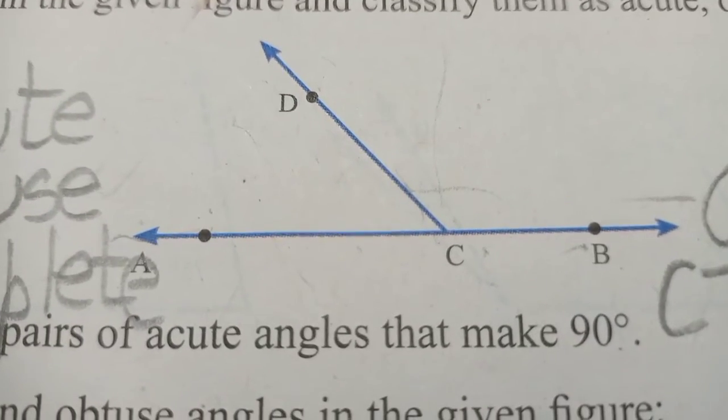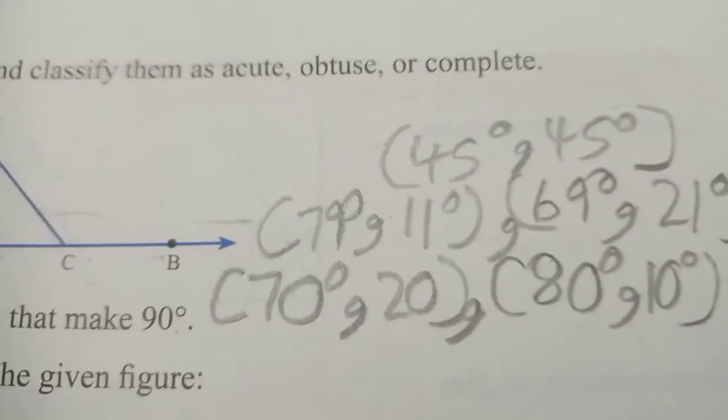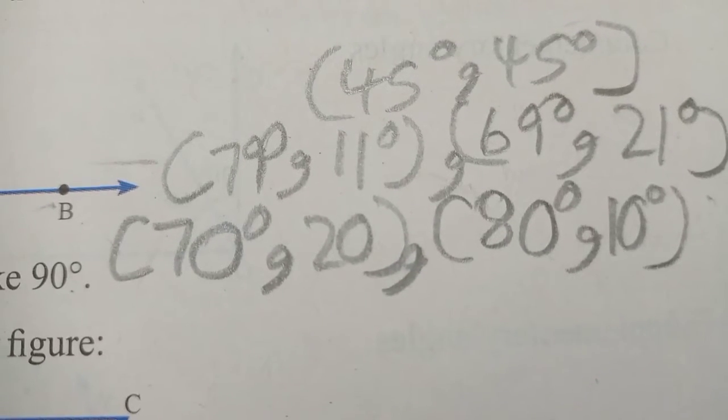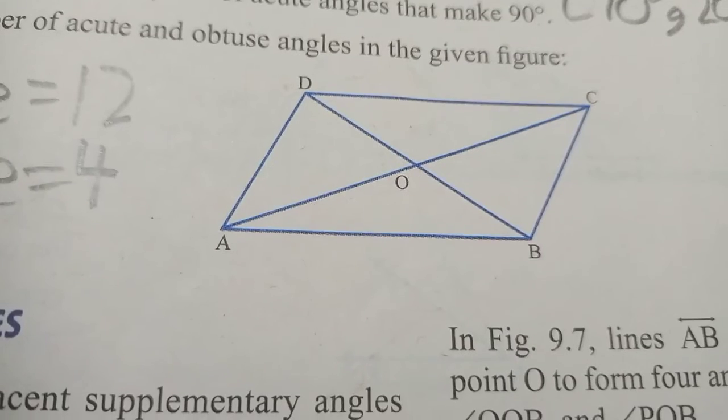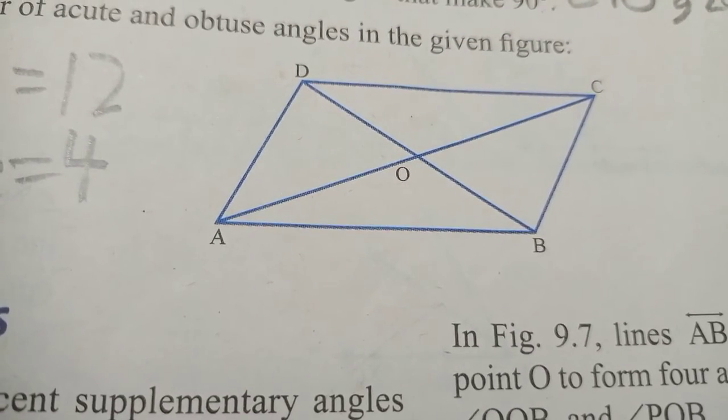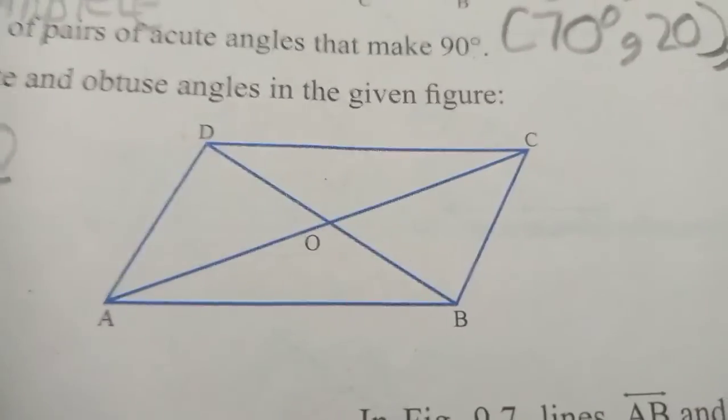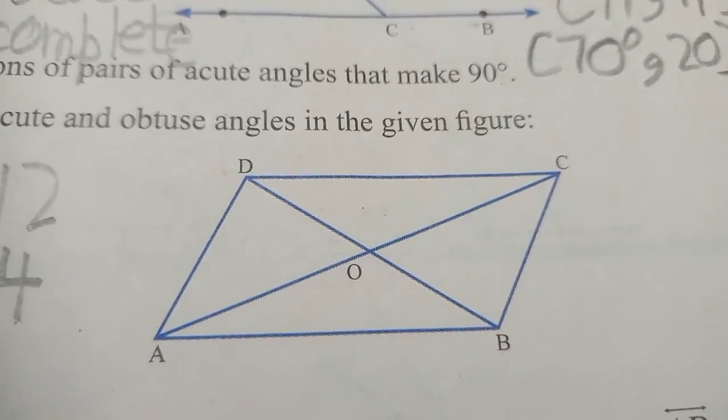Fourth question: make five combinations of pairs of acute angles that make 90 degrees. So we have 45 degrees plus 45 degrees, 79 degrees and 11 degrees, 69 degrees and 21 degrees, 70 degrees and 20 degrees, 80 degrees and 10 degrees. Write the number of acute and obtuse angles in the given figure. Total 12 acute angles and 4 obtuse angles.